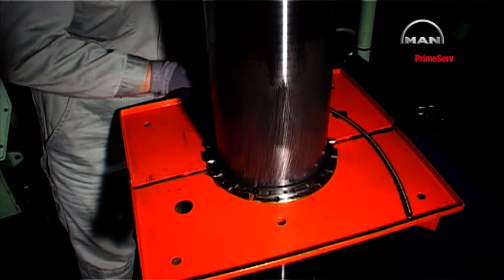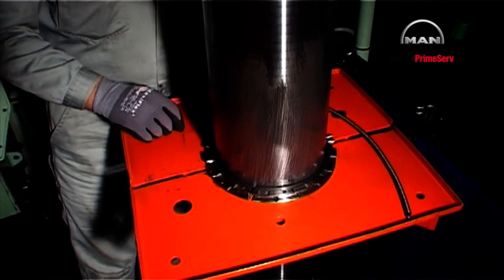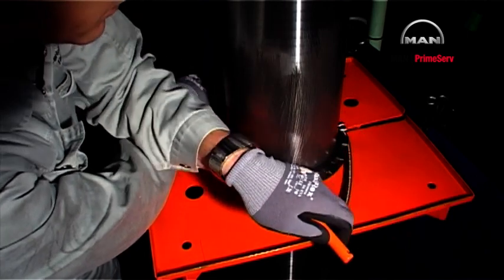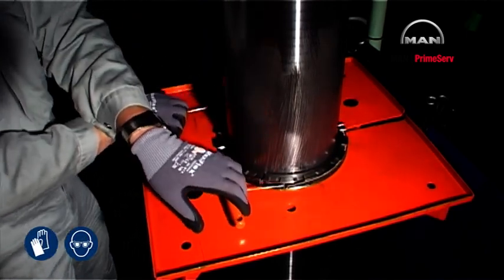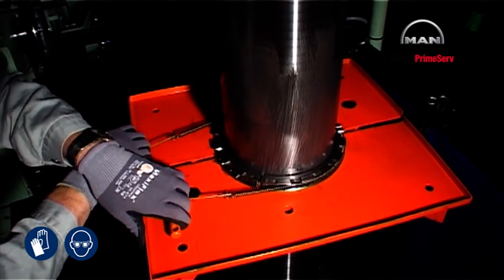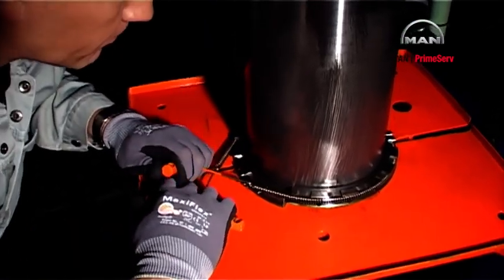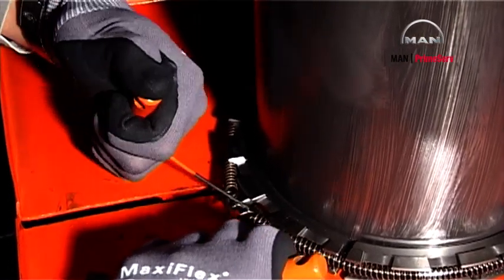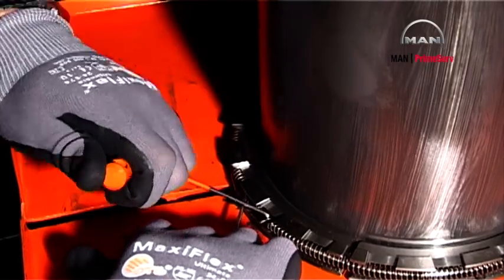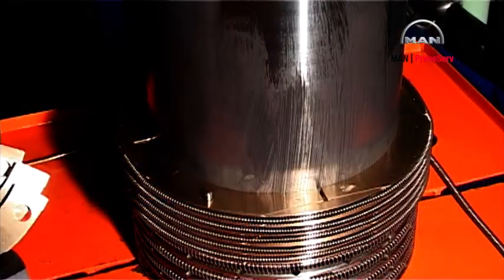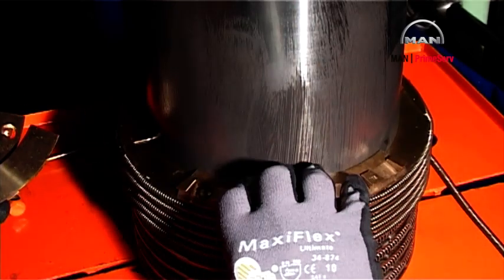Place the lowermost scraper ring segments on the work table. Place the spring round the segments and hook the spring ends together. Repeat this procedure for the remaining scraper rings.